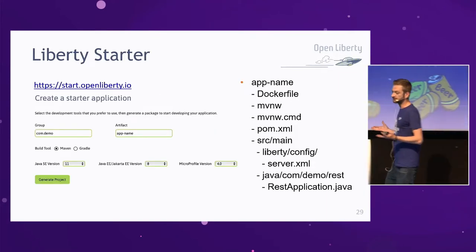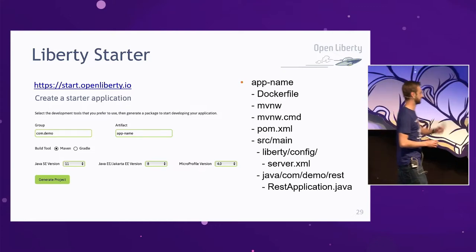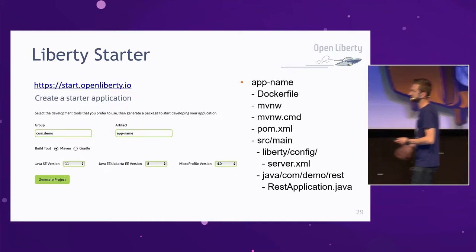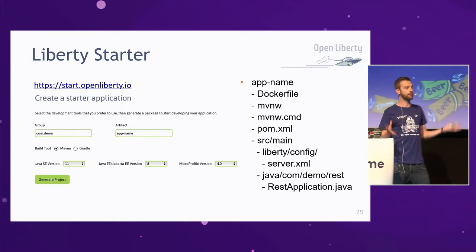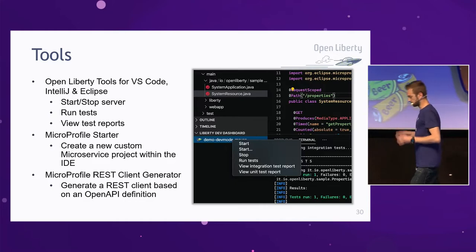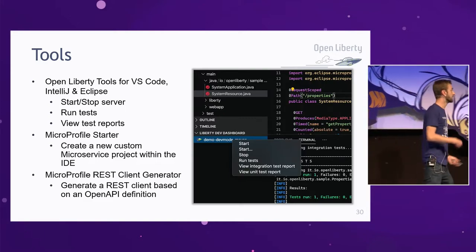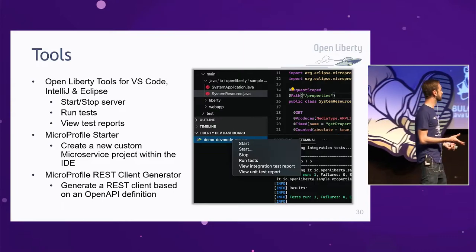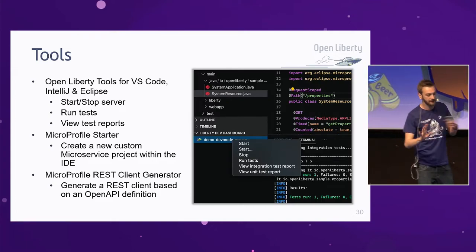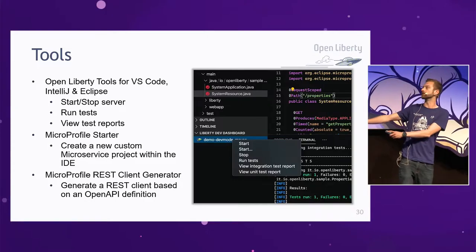We created the Liberty Starter to help you get started very quickly. You can select your Java SE version — up to 17 — your Maven version, your MicroProfile version, and then get started. It will generate all the packages you need very quickly. There are lots of different tools for Open Liberty, made as simple as possible. All these tools work in containers as well — you can start up a container with Open Liberty and use tools in IntelliJ, Eclipse, and VS Code without worrying about the container side. The plugin takes care of all of that.